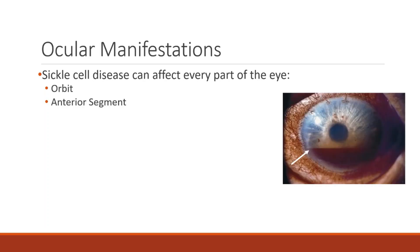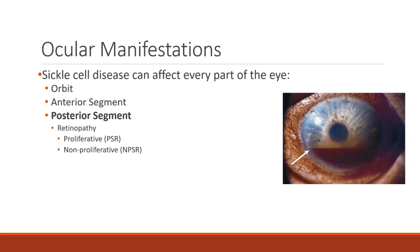Anterior segment complications include the conjunctival comma sign and vision-threatening hyphema, as seen here, when the rigid sickled red blood cells cause dangerously increased intraocular pressure. The focus of this lecture will be on the complications associated with the posterior segment, specifically proliferative and non-proliferative retinopathies.